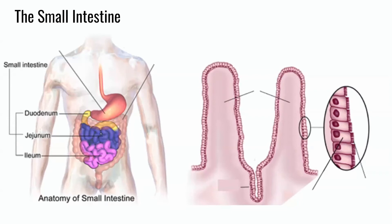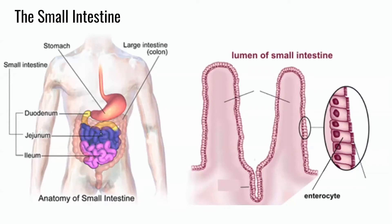The small intestine is the organ most directly involved in celiac disease, located between the stomach and the large intestine. Inside is the lumen, through which food passes during digestion, surrounded by the intestinal epithelium — a single layer of cells called enterocytes where most nutrients are absorbed. The lining consists of finger-like projections called villi with invaginations between them called crypts, and each enterocyte also has microvilli on its surface. These structures increase the surface area of the intestinal epithelium, allowing nutrients to be absorbed more efficiently.